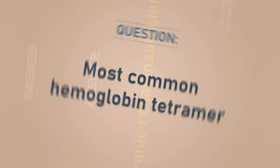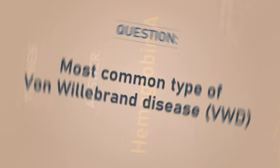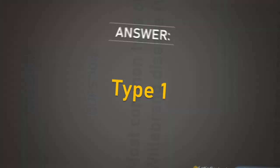Most common hemoglobin tetramer: hemoglobin A. Most common type of Von Willebrand disease: Type 1.